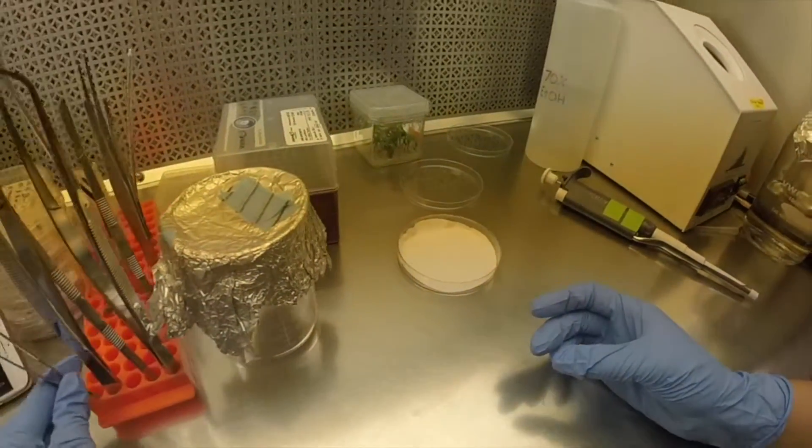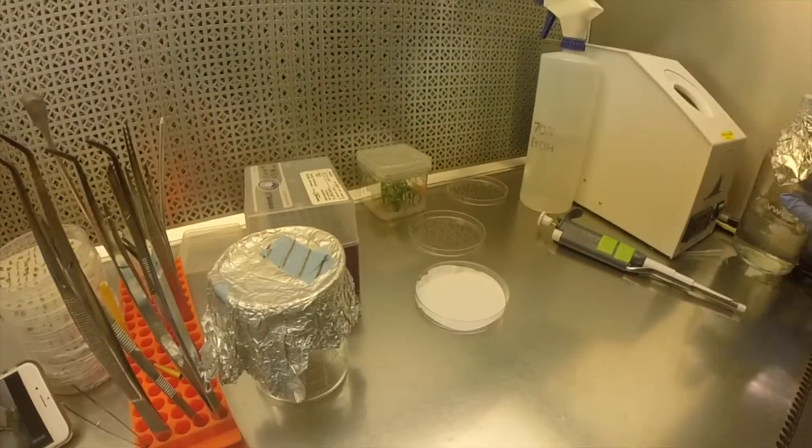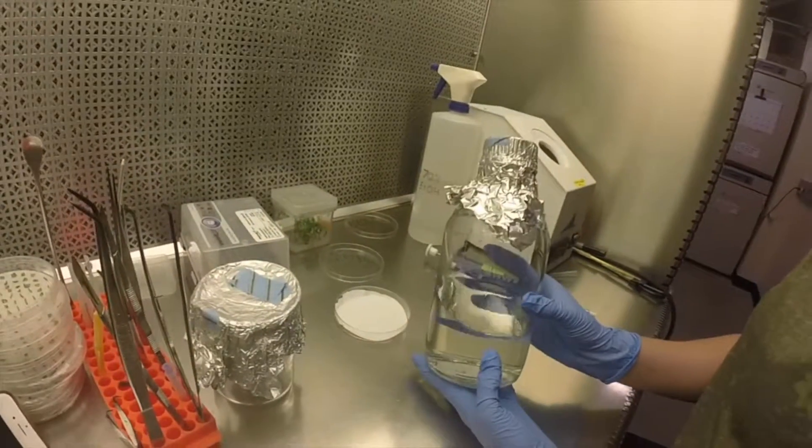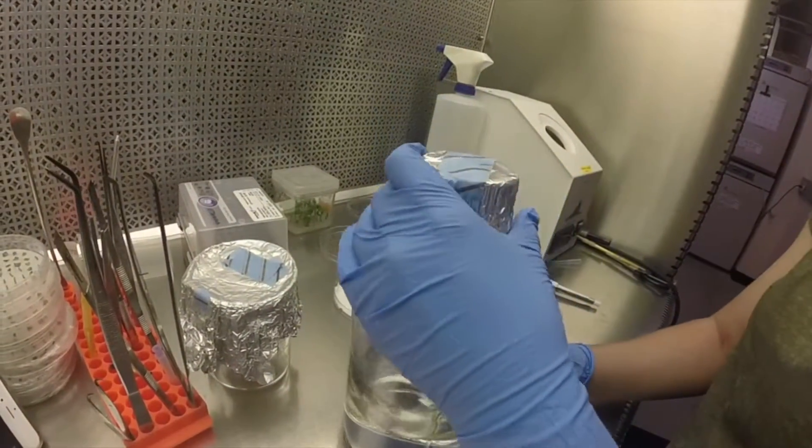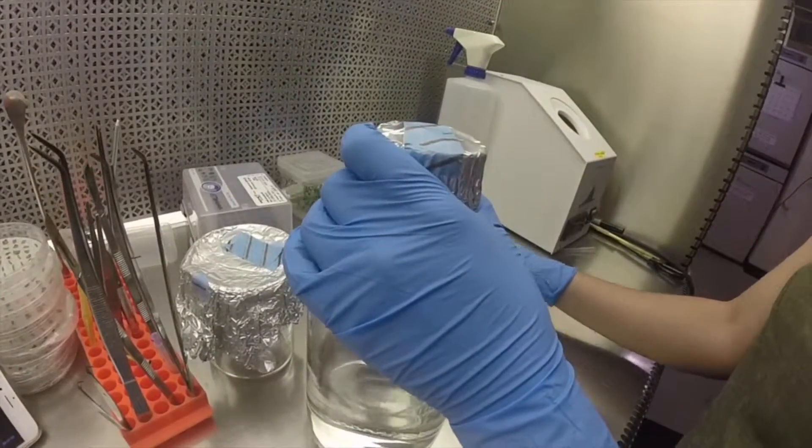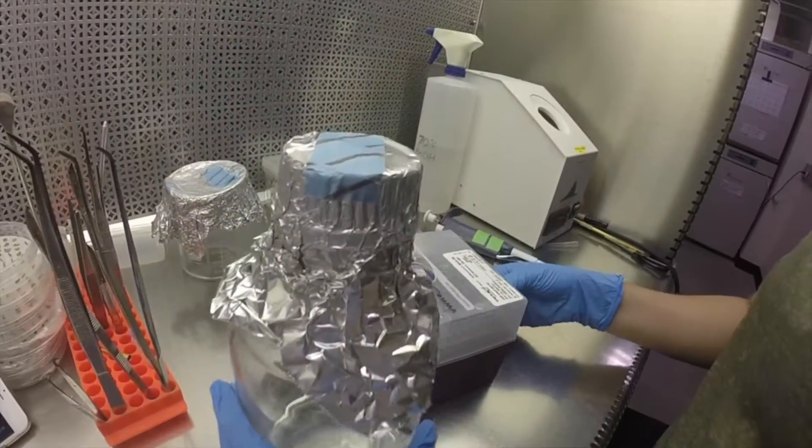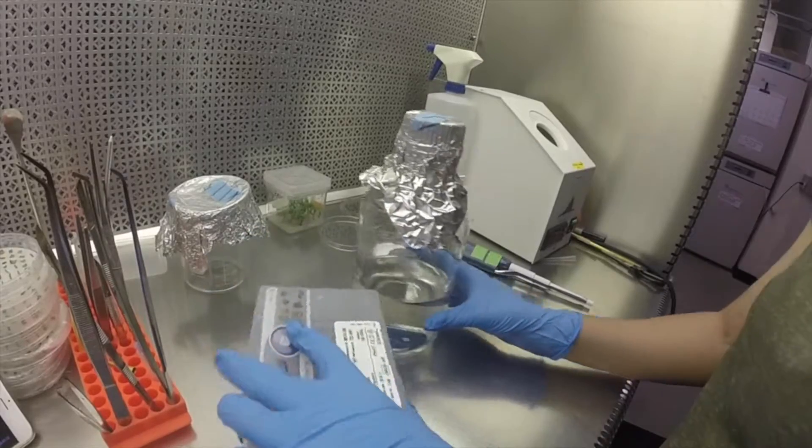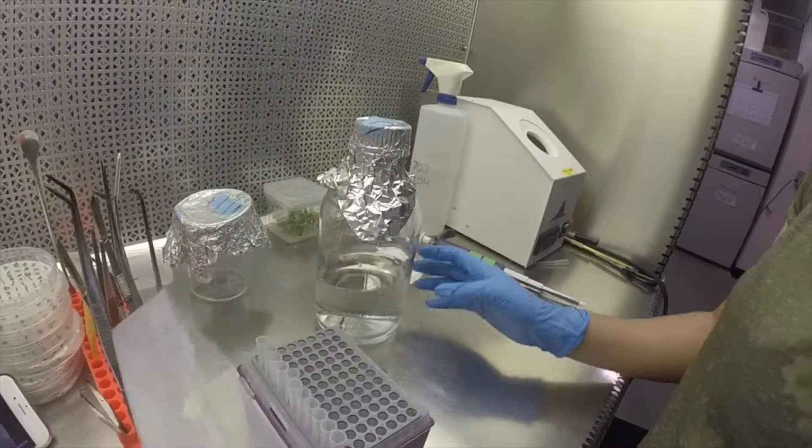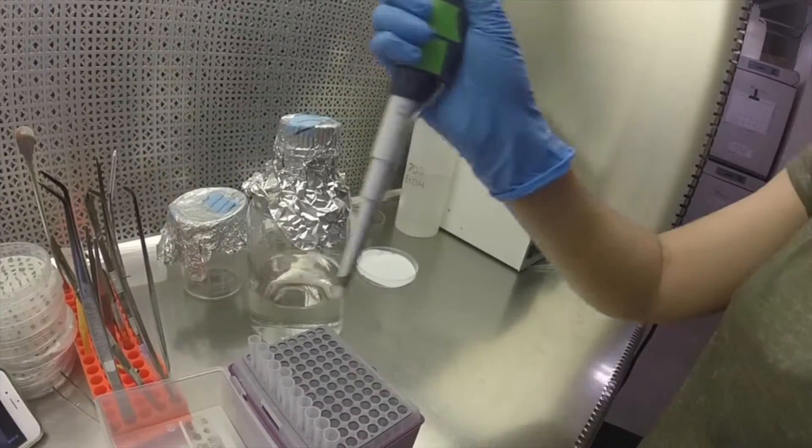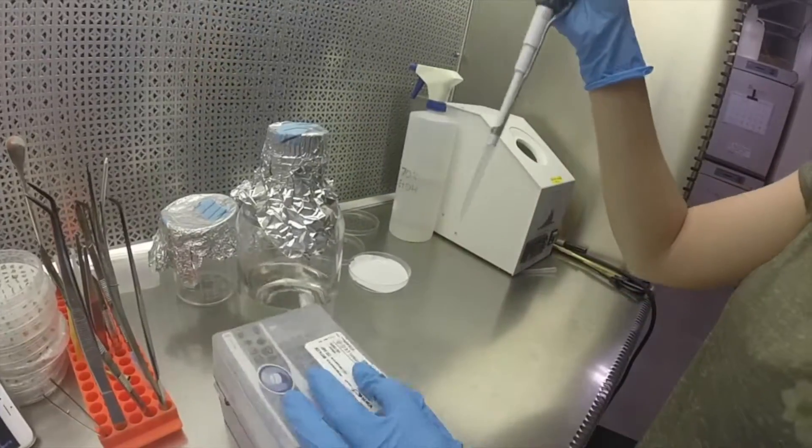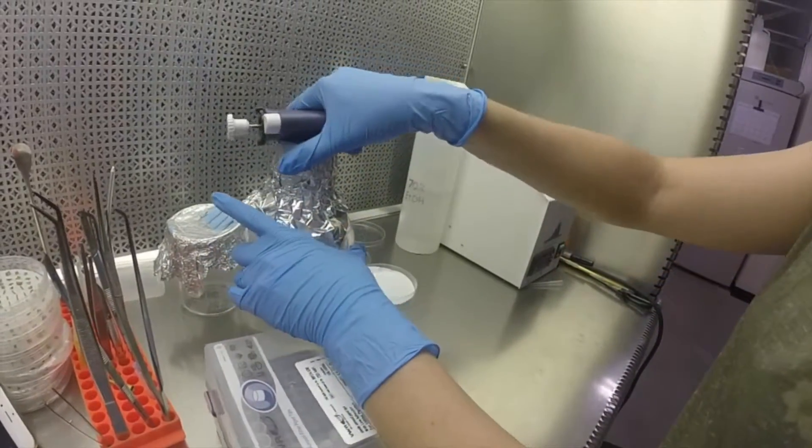Once we have our filter paper in place, we're going to take some sterile MS medium liquid medium that we have already prepared. We're going to pipette two milliliters of media onto the filter paper. All of this stuff will be sterilized ahead of time.